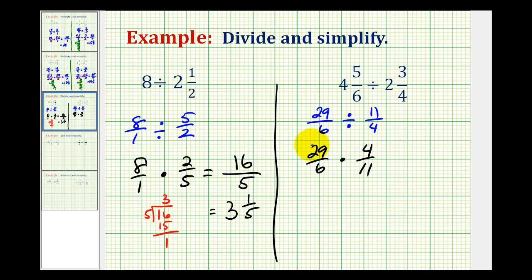29 is a prime number and so is 11, but notice how 4 and 6 do share a common factor of 2. So just to make that really clear, I'm going to go ahead and rewrite this as 29 over 2 times 3, times 4 is equal to 2 times 2, all over 11. And now we can easily see the common factor of 2 here and here, which simplifies to 1.